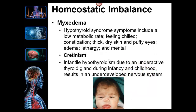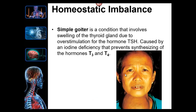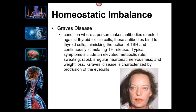Cretinism and myxedema are deficiencies of T3 and T4 — infantile hypothyroidism. Cretinism results in an under-matured nervous system. Too much of the thyroid hormones causes Graves' disease — you can see the eyes bulging. The key sign is seeing the sclera below the eyelid, and the throat is also kind of swollen. It's an autoimmune disorder.